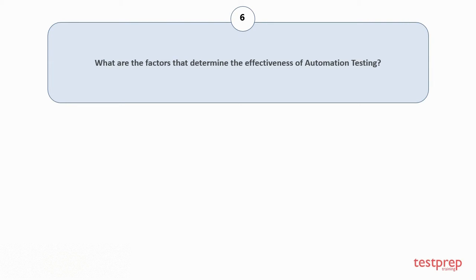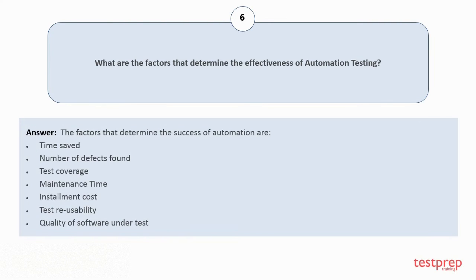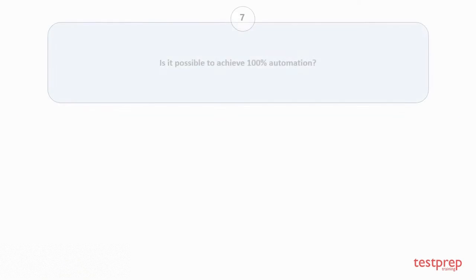Question number six: What are the factors that determine the effectiveness of automation testing? The factors that determine the success of automation are: one, time saved; two, number of defects found; three, test coverage; four, maintenance time; five, installation cost; six, test reusability; seven, quality of software under test.